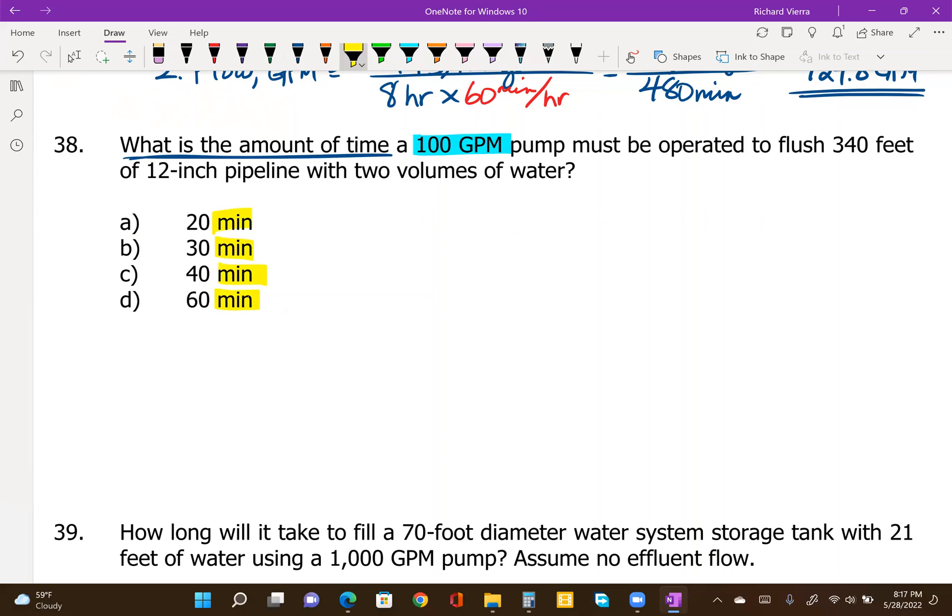How long or what is the amount of time a 100 gallon per minute pump must be operated to flush 340 feet of 12 inch pipeline with, now this is a little different, with two volumes of water. So we're going to flush it through completely twice. This is a setup that we can use the pie chart for. So volume on top, and then on the bottom flow and time. In this case, we are solving for time.